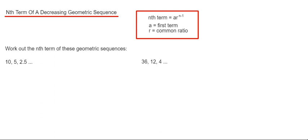This is the number that you multiply the previous term by to give you the next number in the sequence. You can get this by dividing the second term by the first term or the third term by the second term.